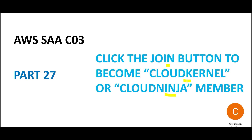What is the difference? Cloud Kernel is for entry and intermediate certifications. Cloud Ninja is for entry, intermediate, but most importantly the advanced certifications — like AWS Solution Architect Professional, AWS Data Analytics, and so on.